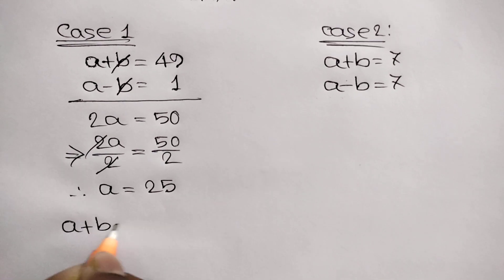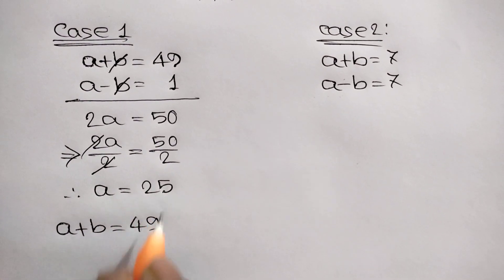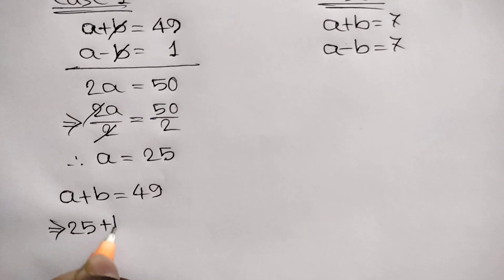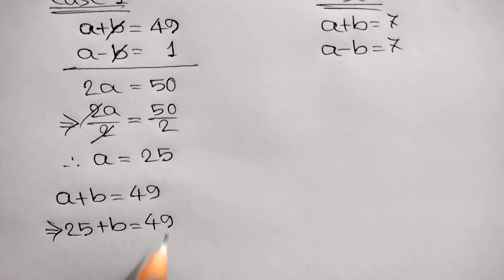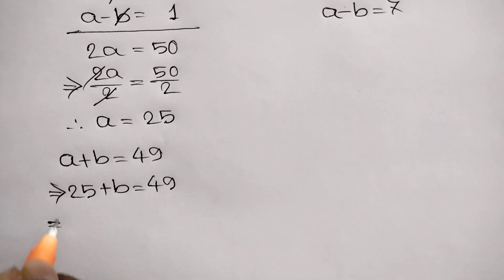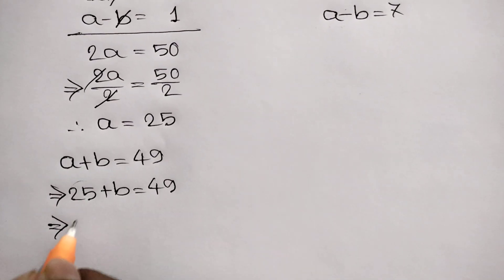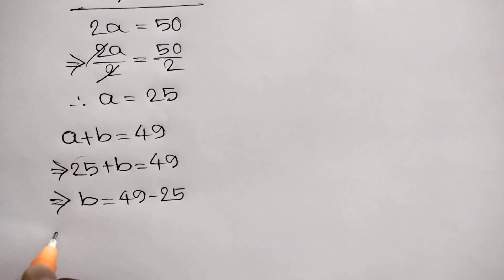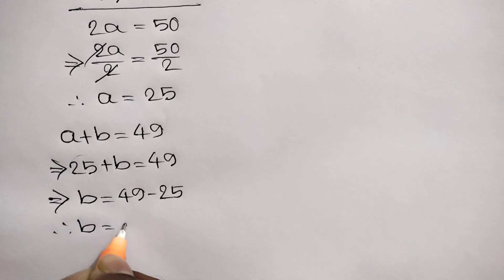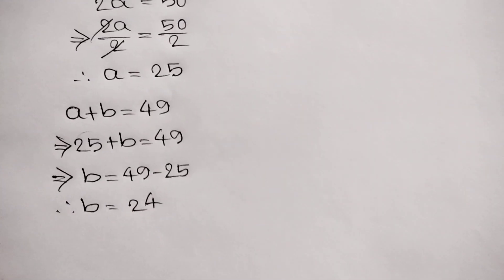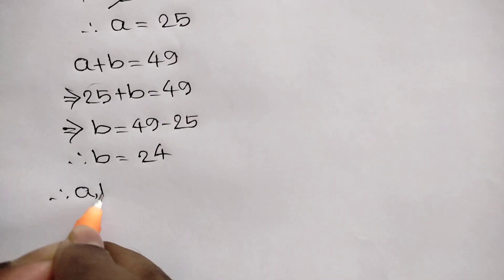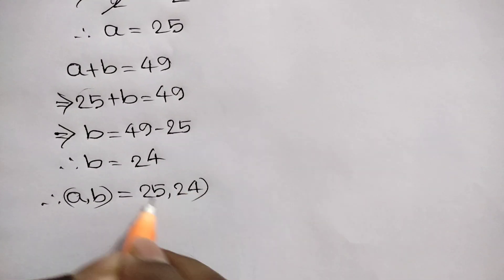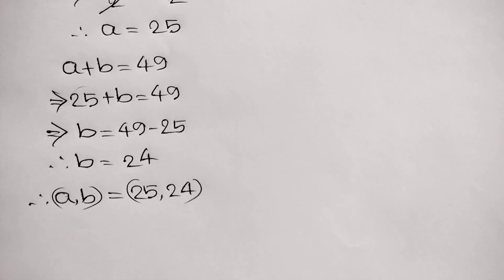Since a is equal to 25, we write 25 plus b is equal to 49. Taking 25 to the right side, b is equal to 49 minus 25, so the value of b is equal to 24. Therefore, Case 1 gives a, b equal to 25 and 24.